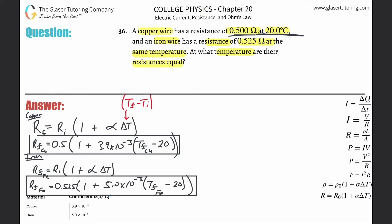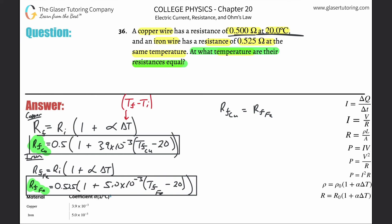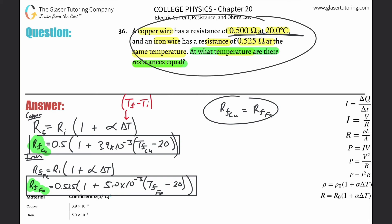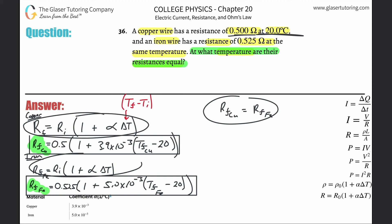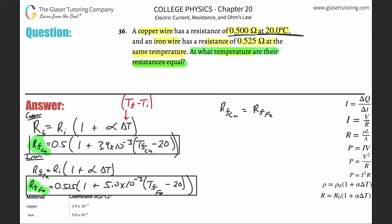They told us another extremely important piece of information: at what temperature are their resistances equal? So I need to find the final temperature at which the resistances are equal, meaning I can set the final resistance of copper equal to the final resistance of iron. You could also start the problem with this condition and work backwards — either way, we plug in both formulas on each side.